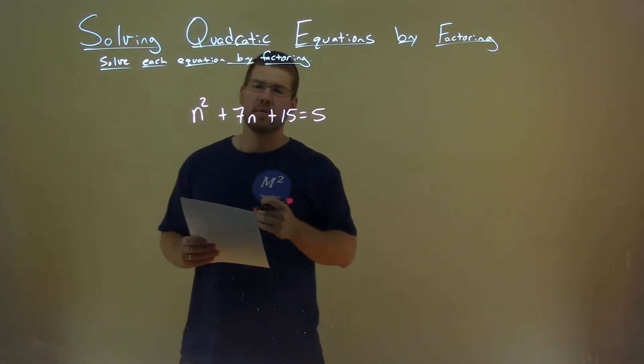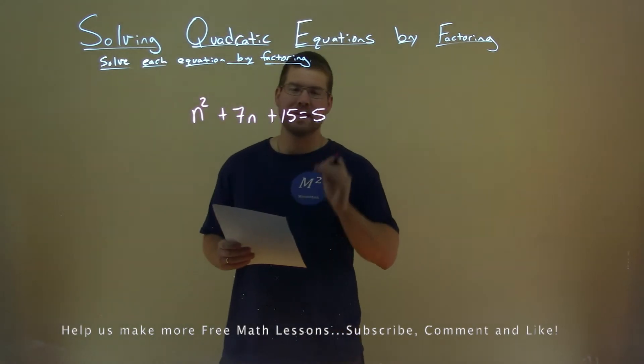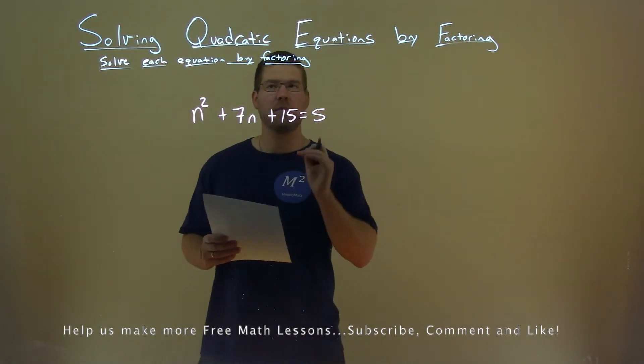We're given this problem right here: n squared plus 7n plus 15 equals 5, and we need to solve this by factoring.